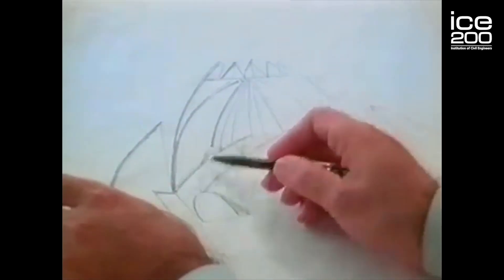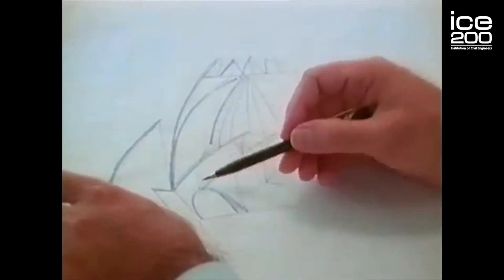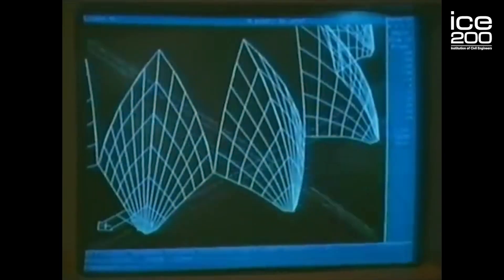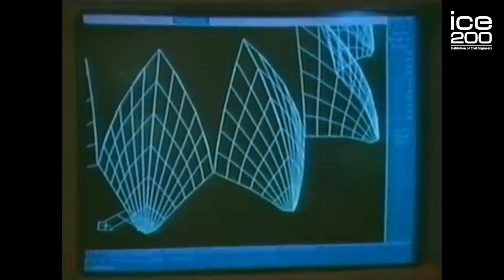Our challenge was first of all to work out what the geometry should be — he's got a lotus flower, so what should the geometry be — and then how can the people who have to build it set that out and construct it properly.